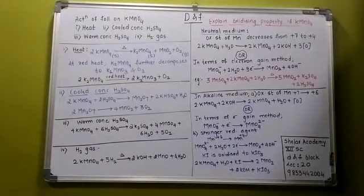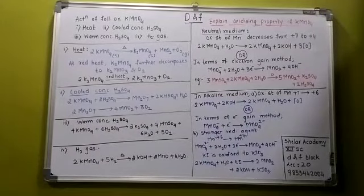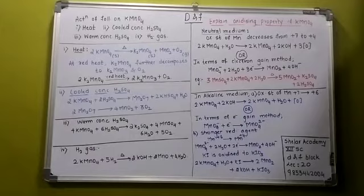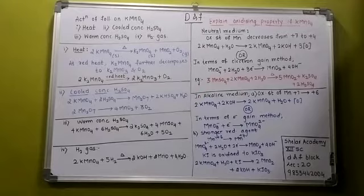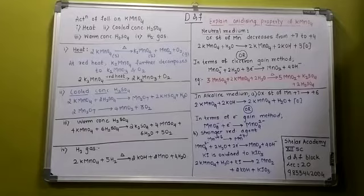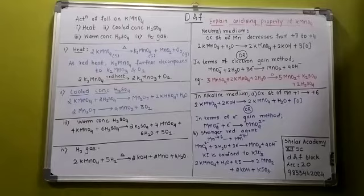Lecture number 20. What is the action of the following on K-MnO4? You have to write the reactions, practice them, and then only you can remember. The very first is the action of heat, second is cooled concentrated sulfuric acid, next is warm concentrated, and the next is hydrogen gas on K-MnO4.